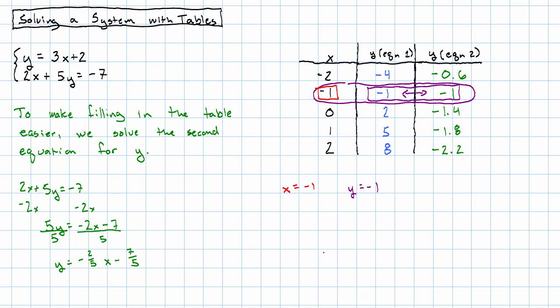Let's see if that's really a solution. Negative 1 equals 3 times negative 1 plus 2. Sure does. 2 times negative 1 plus 5 times negative 1 equals negative 7. Sure does.